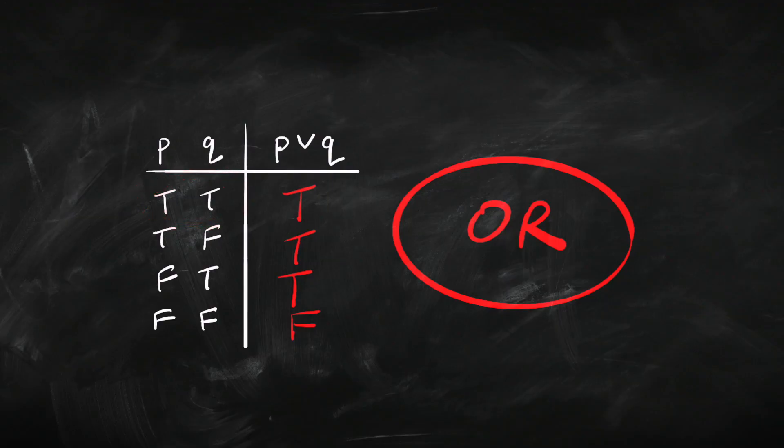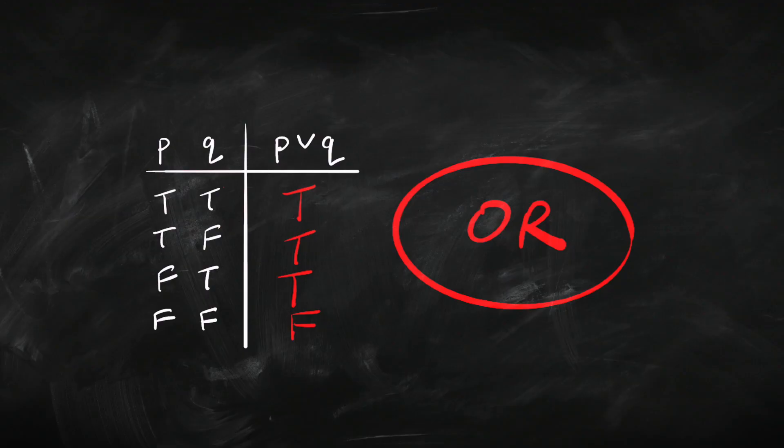The case that sometimes confuses people is the case where P and Q are both true. We're taking or to be inclusive — it means either one or the other or both of them together. There are three ways or can be true. We could instead deal with an exclusive or, which would mean one or the other but not both. But we're not going to do that here. We're taking or to be inclusive: one, the other, or both. So there are three ways of being T and just one way of being F.